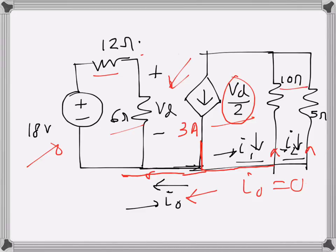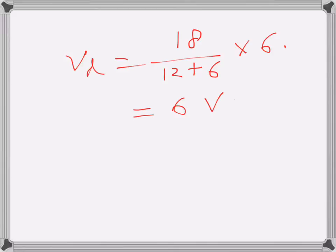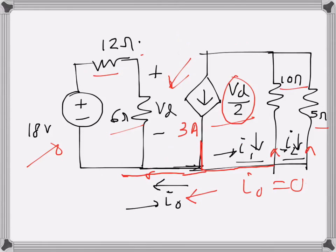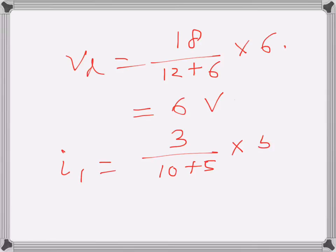10 and 5 ohms. Basically i1 will be, the current here is 3 amps, so 3 over 10 plus 5 times—i1 is through the 10 ohms resistance so it will be multiplied by 5—so that will be 1 amp.